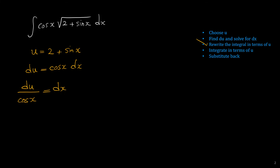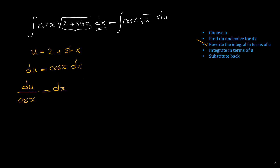Now we rewrite the integrand in terms of u. We write cosine of x, replace the expression inside the square root with u to get cosine of x times radical u, and replace dx with du over cosine of x. Cosine of x from the denominator cancels with cosine of x in the numerator, leaving us with the integral of radical u du.